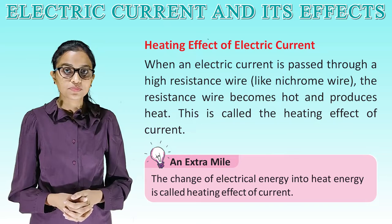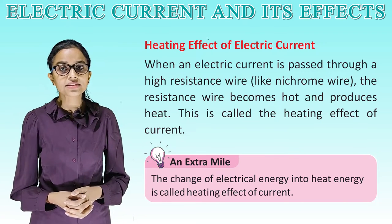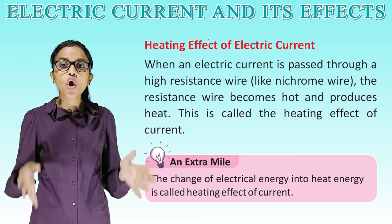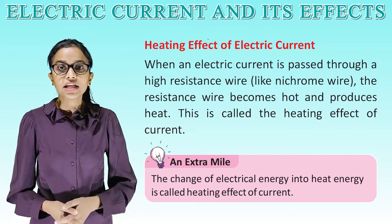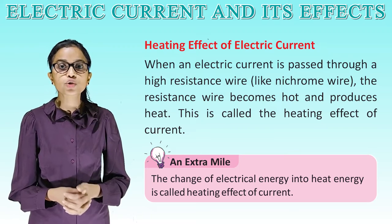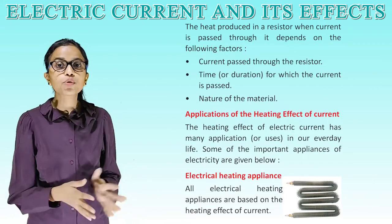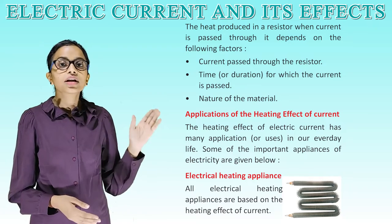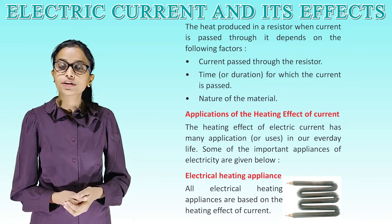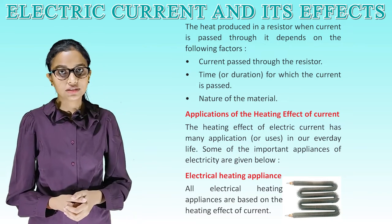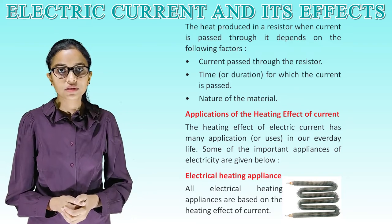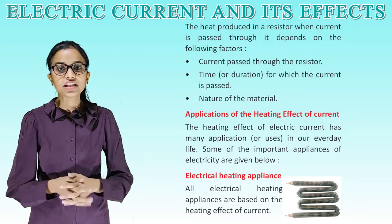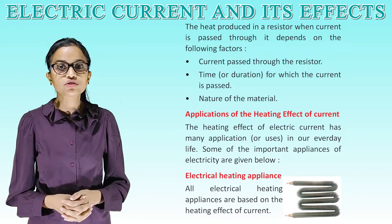Heating effect of electric current. When an electric current is passed through a high resistance wire like a nichrome wire, the wire becomes hot and produces heat. This is called the heating effect of current. The heat produced in a resistor when current is passed depends on the following factors: the current passed through the resistor, the time or duration for which the current is passed, and the nature of the material.